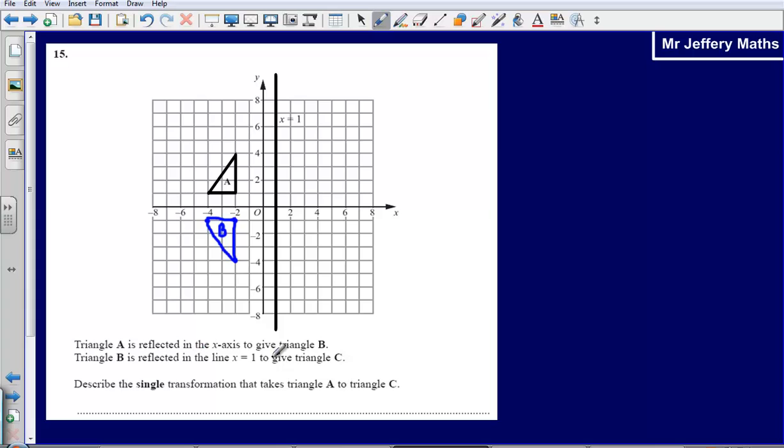Now triangle C, it tells us triangle B is reflected in line x equals 1. We can see the line x equals 1 there to give triangle C. So let's reflect this shape in x equals 1, and this gives us triangle C.